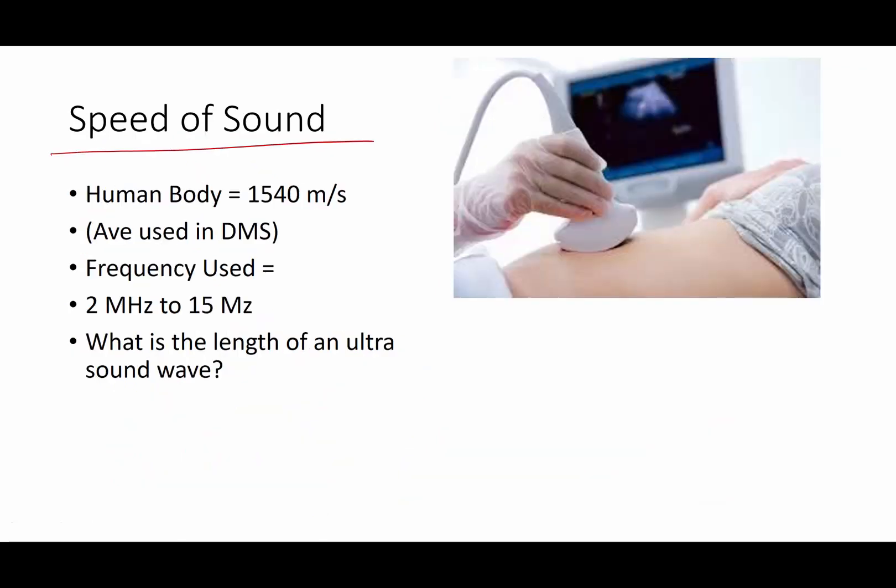When you're talking about the speed of sound, the human body has an average speed of 1540 meters per second. That's the speed that is used very often in ultrasound or DMS. The frequency, depending upon what you're using in your DMS, 2 megahertz to 15 megahertz. I think I abbreviated, overly abbreviated there, megahertz.